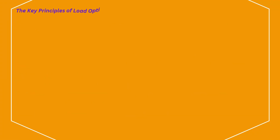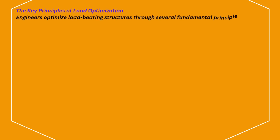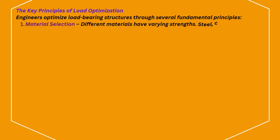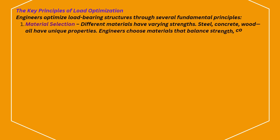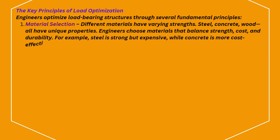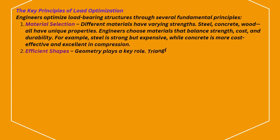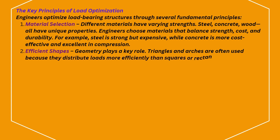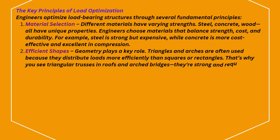Engineers optimize load-bearing structures through several fundamental principles. First, material selection: different materials have varying strengths — steel, concrete, and wood all have unique properties. Engineers choose materials that balance strength, cost, and durability. For example, steel is strong but expensive, while concrete is more cost-effective and excellent in compression. Second, efficient shapes: geometry plays a key role. Triangles and arches distribute loads more efficiently than squares or rectangles, which is why you see triangular trusses in roofs and arched bridges.